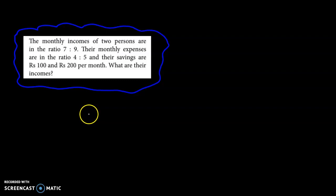The question is: the monthly incomes of two persons are in the ratio 7 to 9.